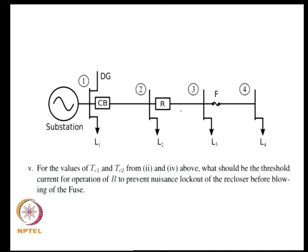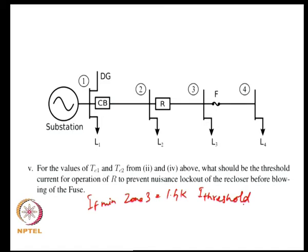A suitable threshold level can correspond to the time used for the Ifmin calculation. The Ifmin for zone 3 in the example was 1.4 kA — we could use that as a threshold, so that for current levels below that you do not have nuisance lockout of the upstream device for a fault in the downstream zone.